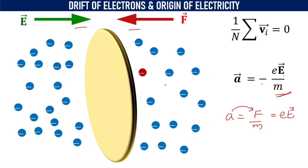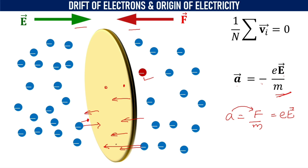Each electron accelerates. In the absence of the electric field, the electron moves randomly. But with the presence of the electric field, all the electrons will be pushed in a direction opposite to that of the electric field. Since there is a drift of the electrons, there will be a net flow of electrons across the given area, and therefore there will be electric current.